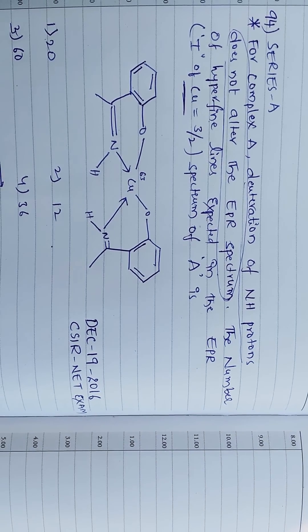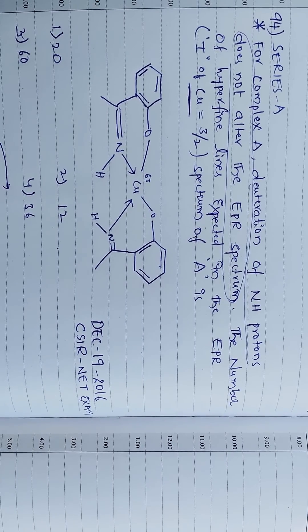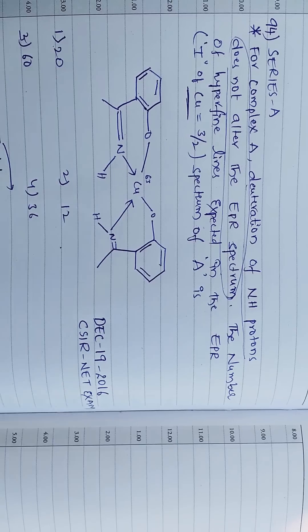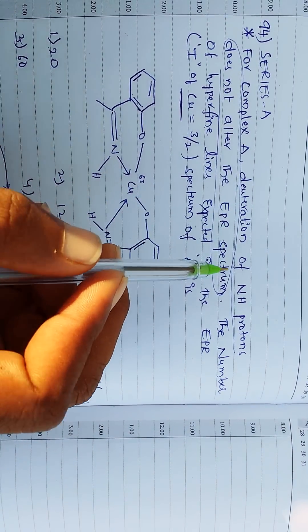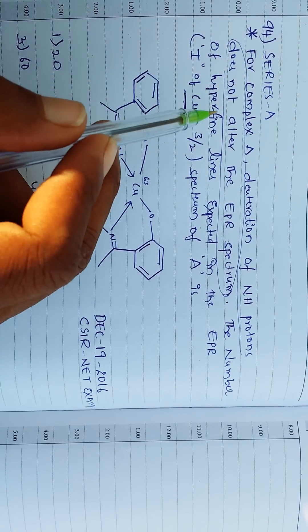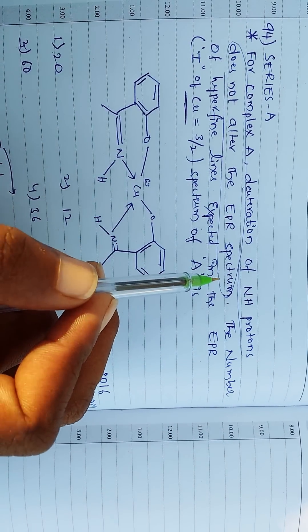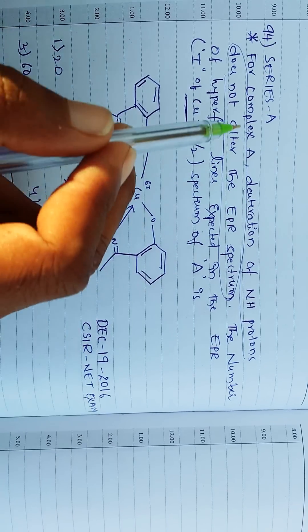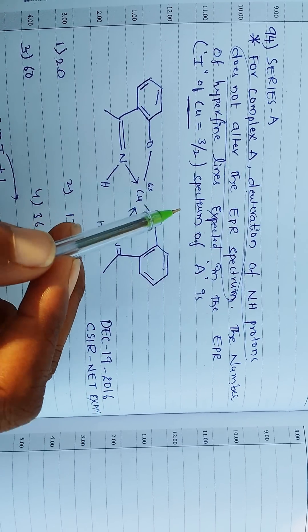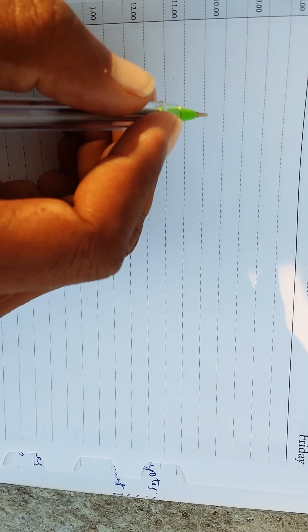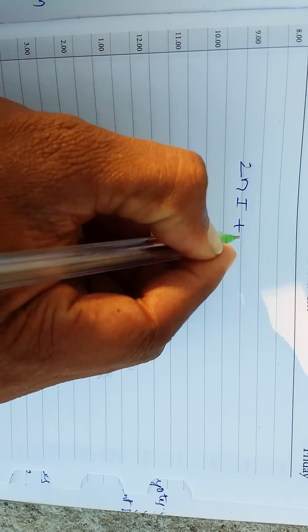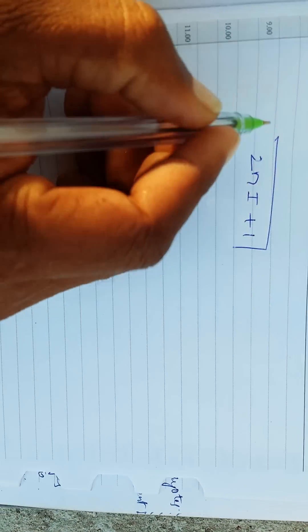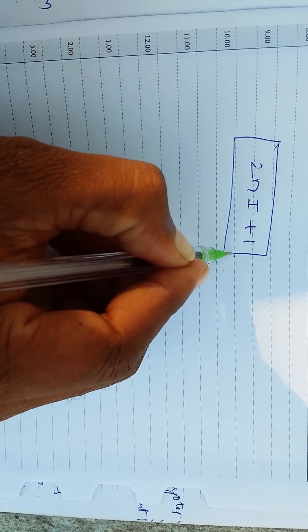The main key point in the question is that the deuteration of NH protons doesn't alter the EPR spectrum. This is the key point to solve this question.